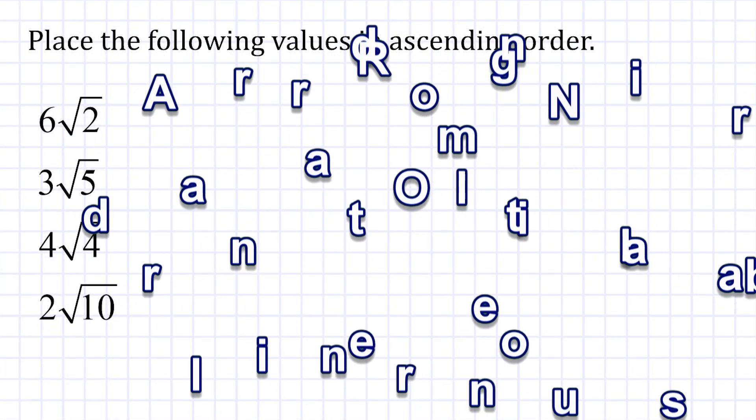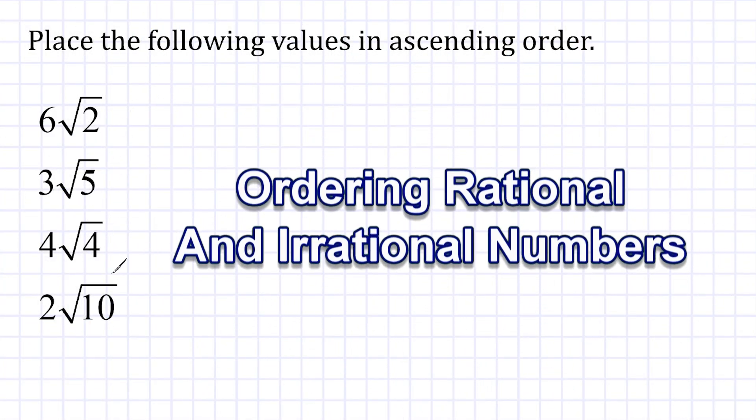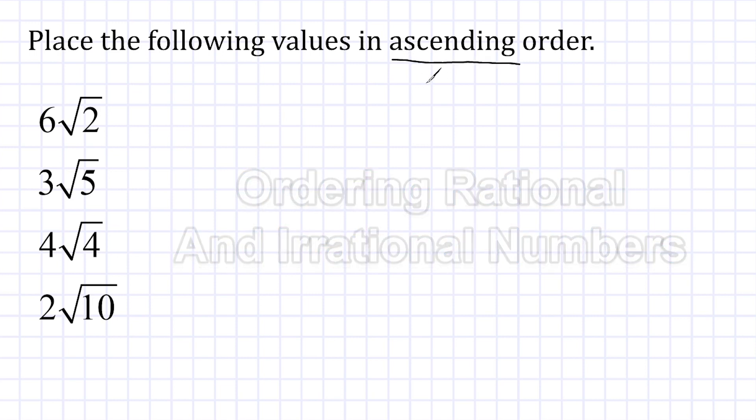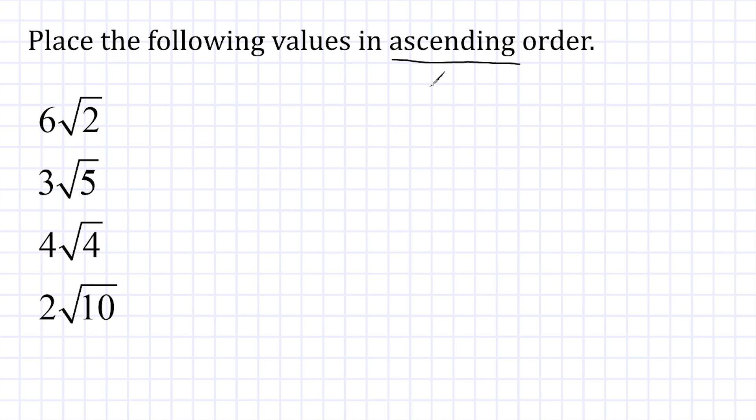Alright, we are tasked with placing these values in ascending order. Ascending just means from least to greatest. To ascend means to go up. If it said descending, we would be going from greatest to the least. So how do we order these values here, which are in a form that we call simplest radical form?